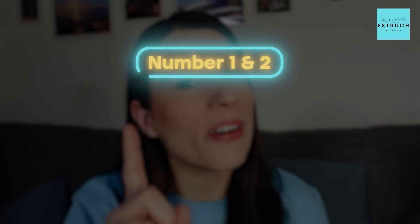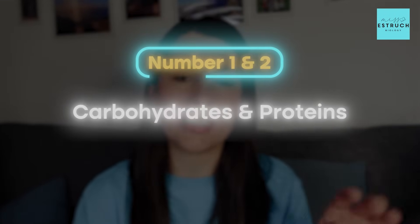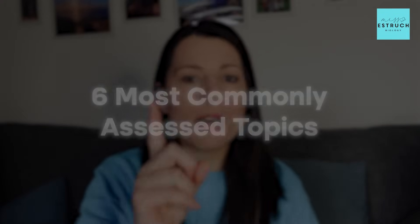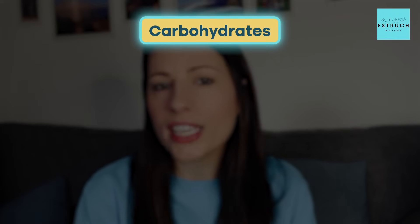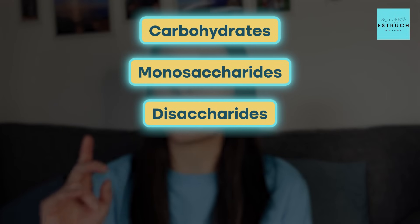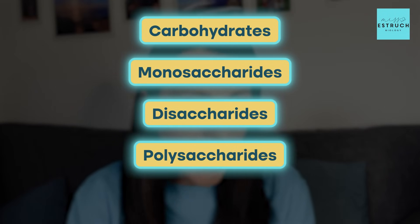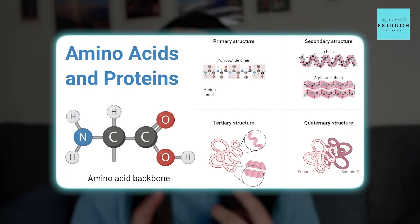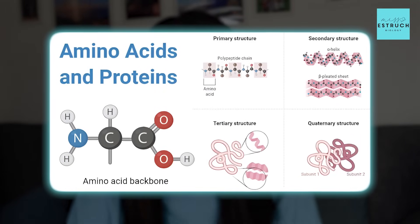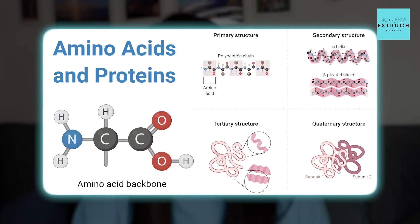Number one on the list is carbohydrates and proteins, which technically are two different spec points. Number one being carbohydrates, number two being proteins. It makes sense because those are such fundamental topics and the building blocks for other molecules, and therefore components of cells, tissues, organs, and organisms. Carbohydrates covers things like monosaccharides, disaccharides, polysaccharides, as well as some of the biochemical tests. And proteins — that's looking at the general structure of amino acids, your primary, secondary, tertiary, quaternary structure, as well as enzymes.